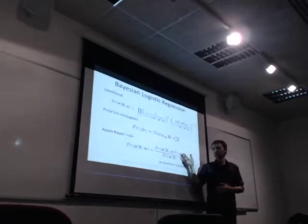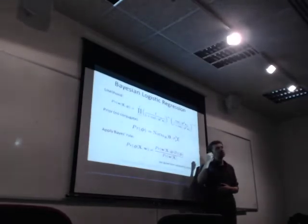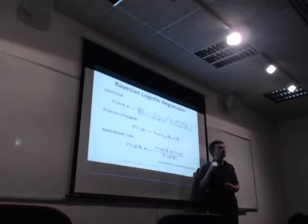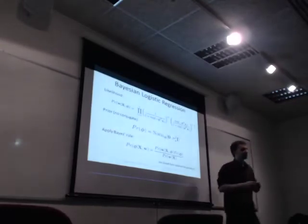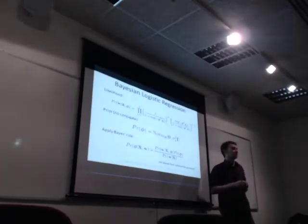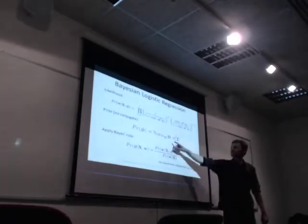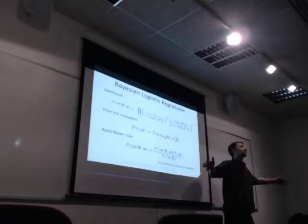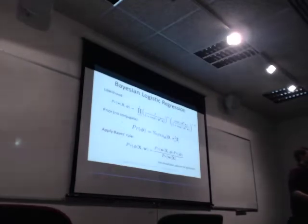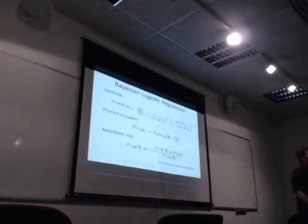We want to encourage phis that are small, and with the beta distribution we don't really have the ability to do that directly. We can control other things with the two parameters of the beta distribution, but what we're really after is to say: go for small phi, with some fuzzy covariance around it.